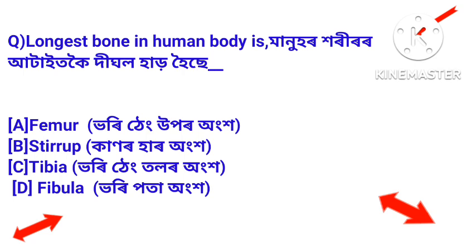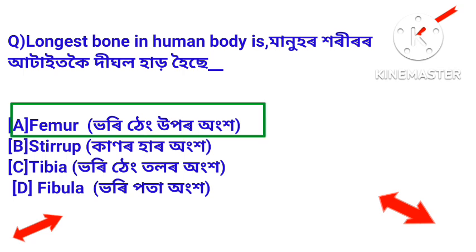First question: the longest bone in human body is? Manohar horira ataikoy di ghal har hoi se? Answer is femur. Manohar horira ataikoy di ghal har dala se, bhori thengan uporo angkot.